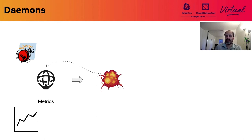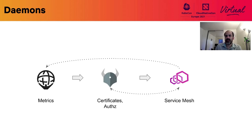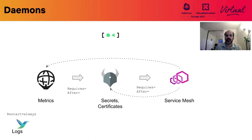In the same way, the service mesh expects TLS certificates and the open policy agent to be available before it starts. Otherwise, every application has to decide if the mesh needs to fail open or short-circuit at start. To do this, we run daemons as systemd units and use its DSL to get the ordering and restart policies we want.